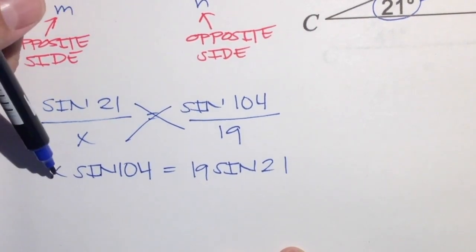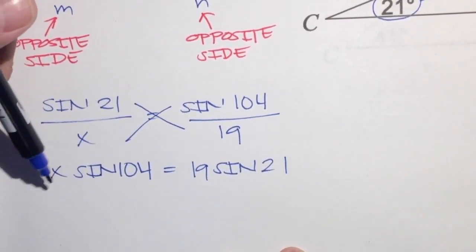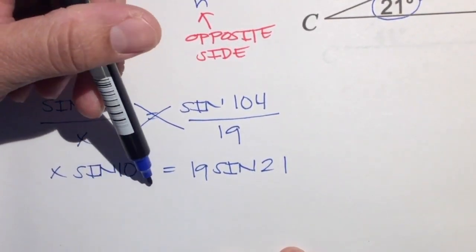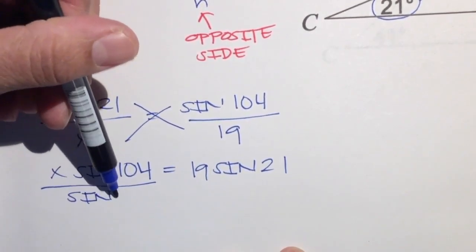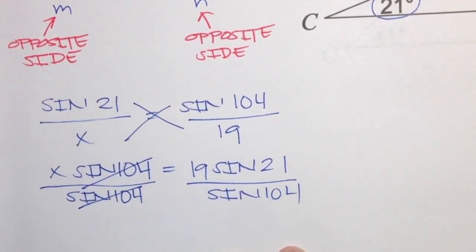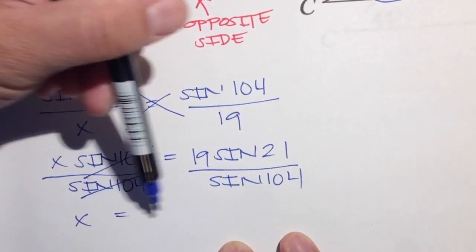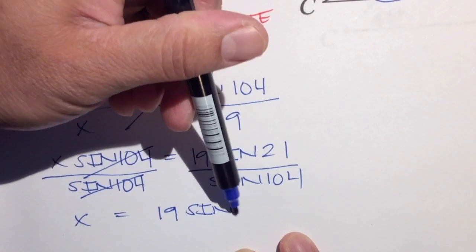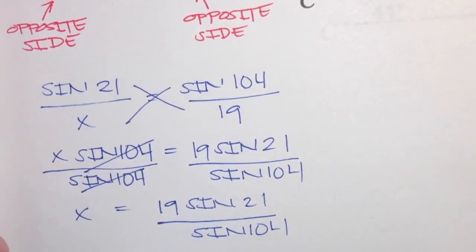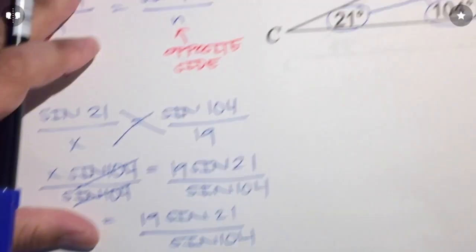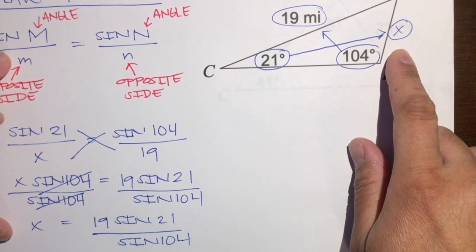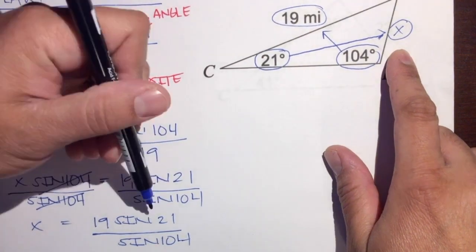X isn't by itself yet — we want to isolate X. X is multiplying sine of 104, so the opposite of multiplication is division. We'll divide both sides by sine of 104. Those cancel out, and now X is by itself: X equals 19 times sine of 21 over sine of 104. There you have it.